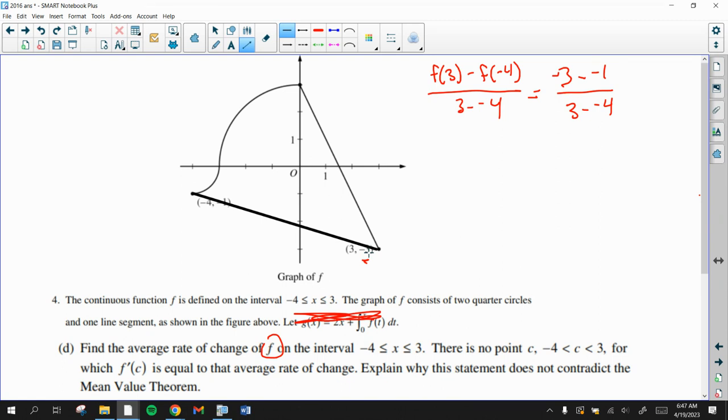Now it's talking about the mean value theorem. And the mean value theorem says once you find that slope, it guarantees that there's at least one point on the interval that has to have that instantaneous slope or that derivative. But this question says, explain why that, it says there is no point that has that derivative. Explain why that fact doesn't contradict the mean value theorem, which says we have to have a point.